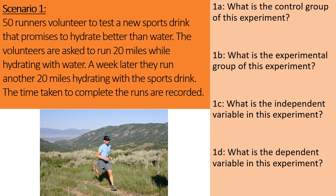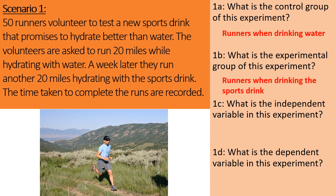For part A, what is the control group? The control group is the normal condition. In this case, hydrating with water is the normal condition. The experimental group is what's being manipulated — what's different — and in this case, it's the runners when drinking the sports drink.